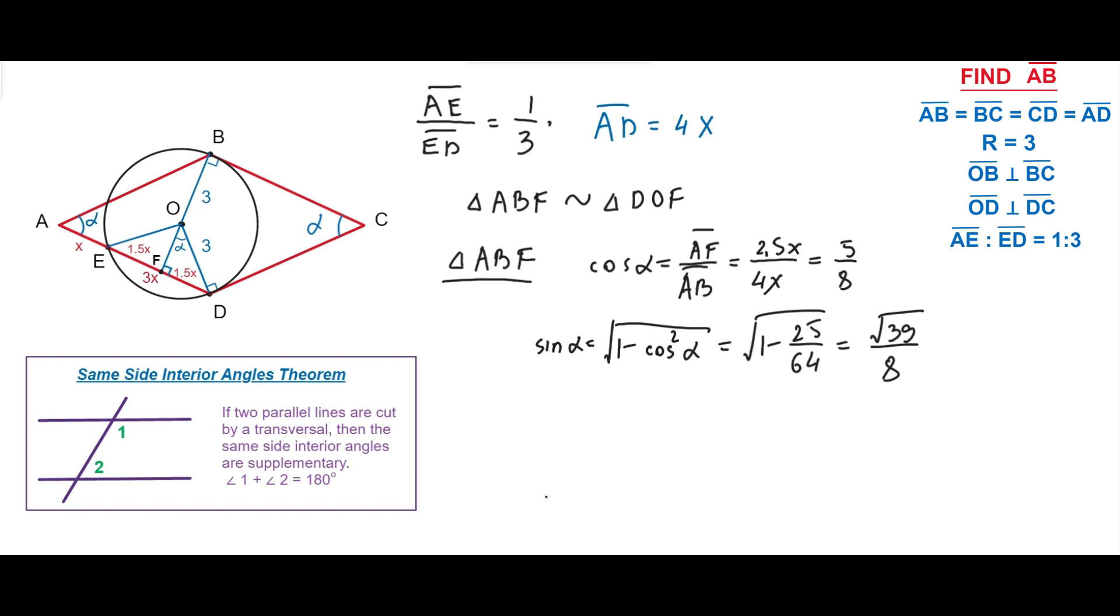From the triangle DOF, we can write the following expression. Sine alpha equals segment FD divided by segment OD equals 1.5X divided by 3. Putting the value of sine alpha here, we can find X equals square root 39 divided by 4.